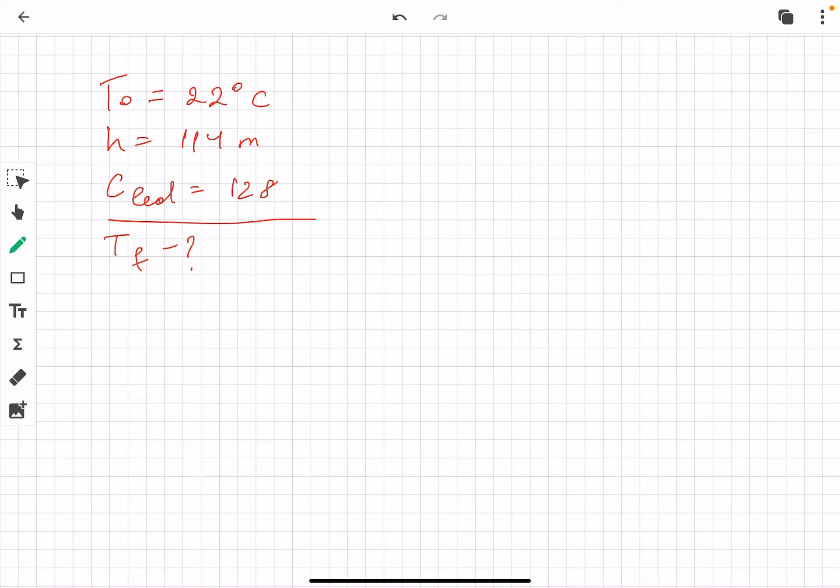We have a lead ball with initial temperature of 22 degrees Celsius released from a height of 114 meters. It does not bounce when it hits the hard surface. Assume all the energy of the fall goes into heating the lead. Find the temperature of the ball after it heats.